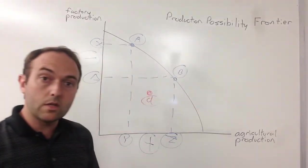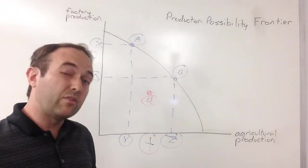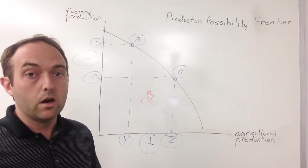We'll call this point D. Point D represents the combinations of goods and services society might be able to make if it's not using all of its resources. That is, if it has unemployment.